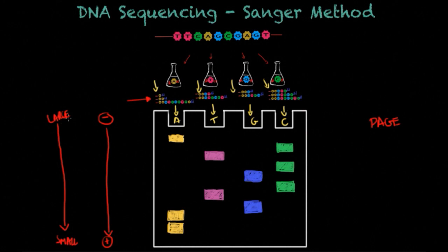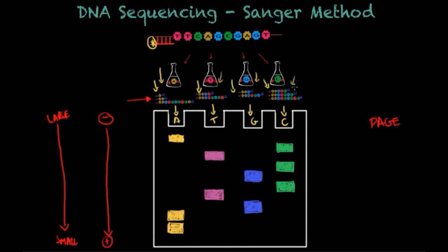Even though I've drawn these bands in different colors so you can associate them to the corresponding chain termination nucleotide, it's important to say that in the real world, due to the fact that we label the primer with a radioactive label — and this primer is found in all of these fragments — we're going to see only one color and not all these colors. But the bands should appear in the same positions shown here.